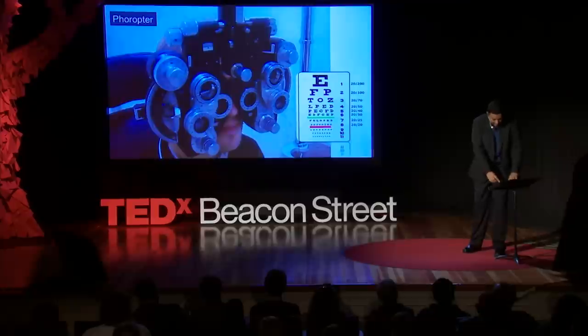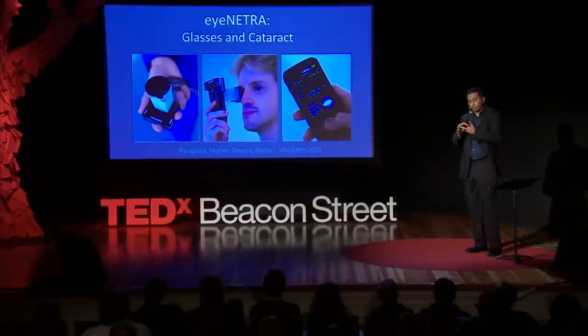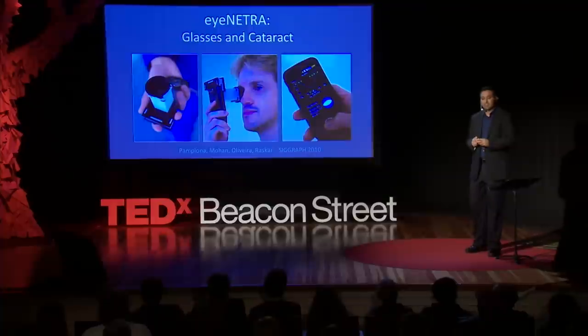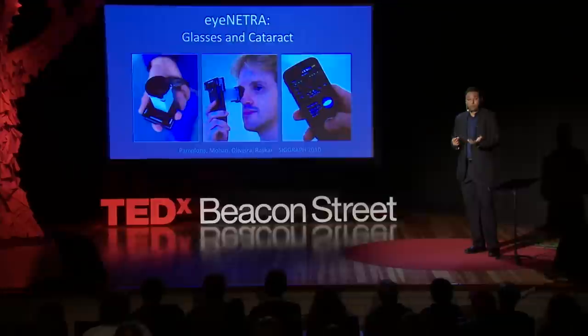So we have a new technology called Netra, which is a snap-on eyepiece that goes on top of a cell phone. You look through this, there'll be some patterns, use the keyboard or the cell phone to align the patterns. When they're aligned, you hit calculate, and it gives you data for prescription of your eyeglasses. Nearsightedness, farsightedness, and astigmatism, the eyepiece costs next to nothing, and the results are comparable to the highest-end instruments that are out there. And as a bonus, you can also scan for your cataract, the cloudiness on your lens.